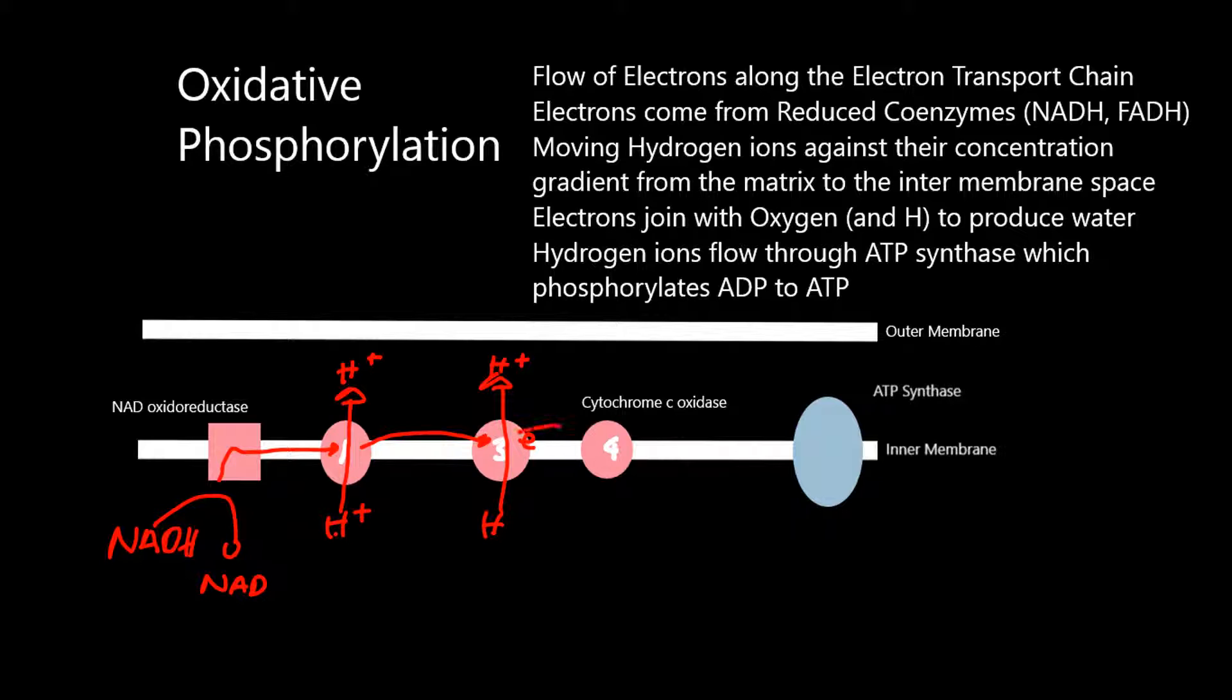The electron is then moved on to the final complex 4, which is cytochrome oxidase, again moving hydrogen ions across the membrane. At the end, the electrons join with oxygen to produce water. So the role of oxygen is as the final electron acceptor in the electron transport chain.